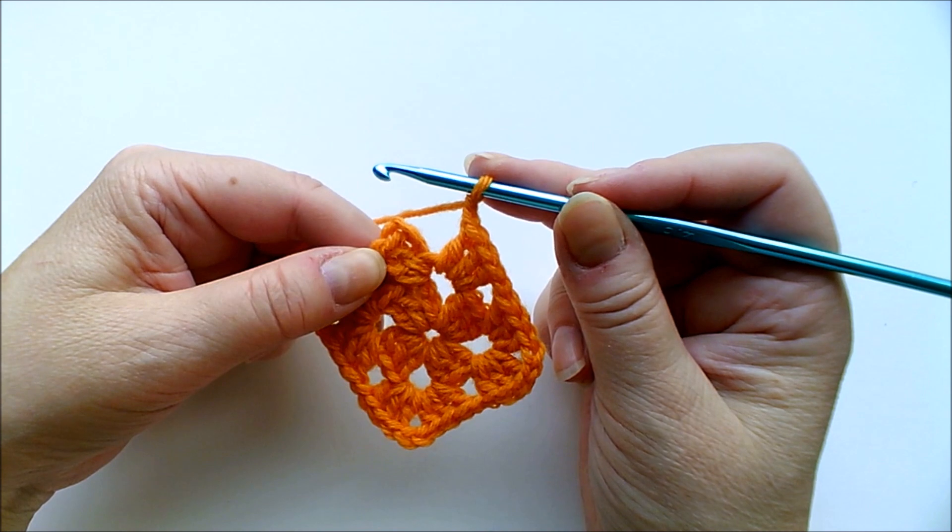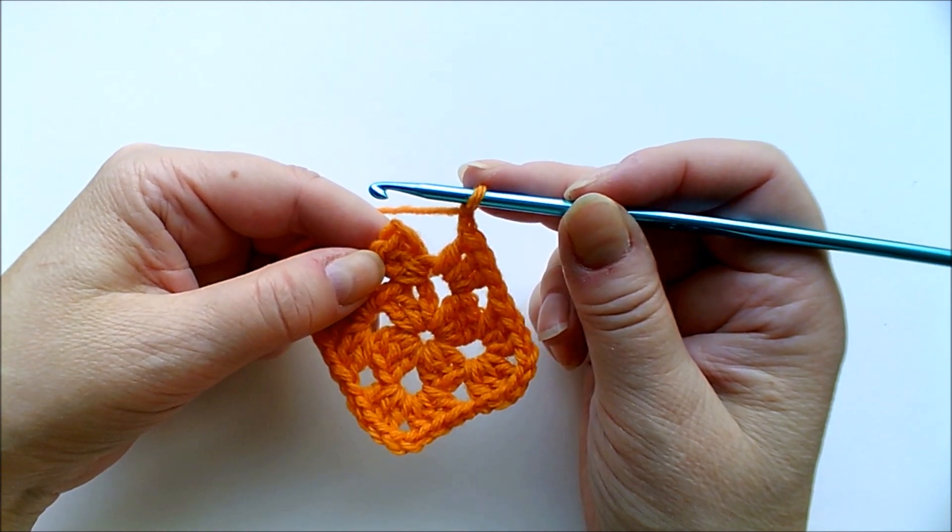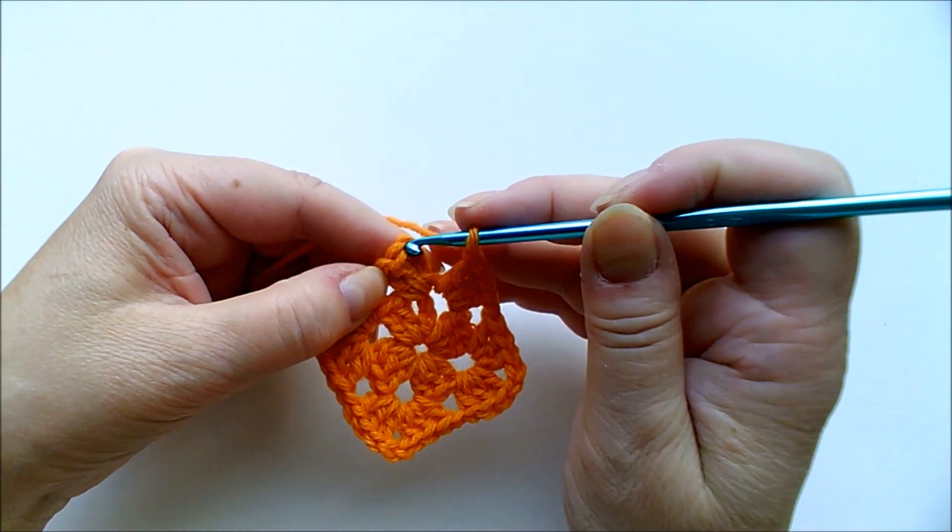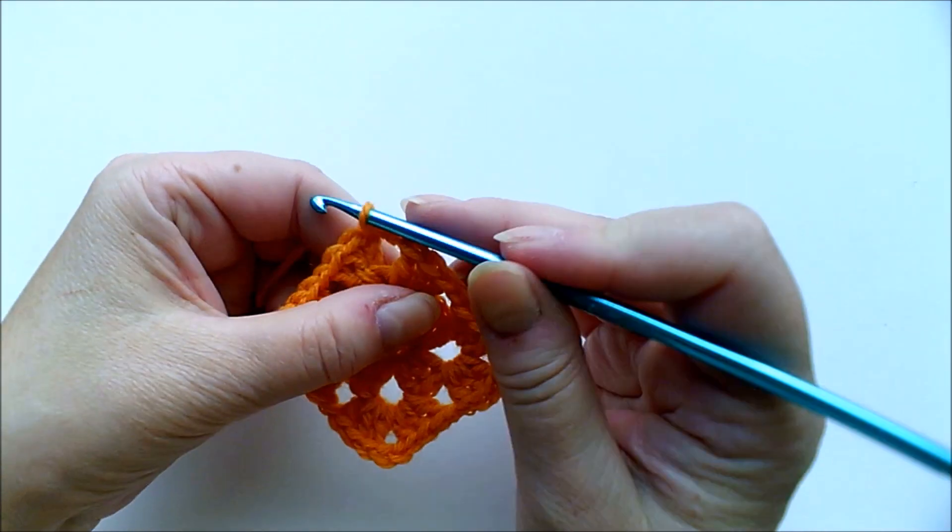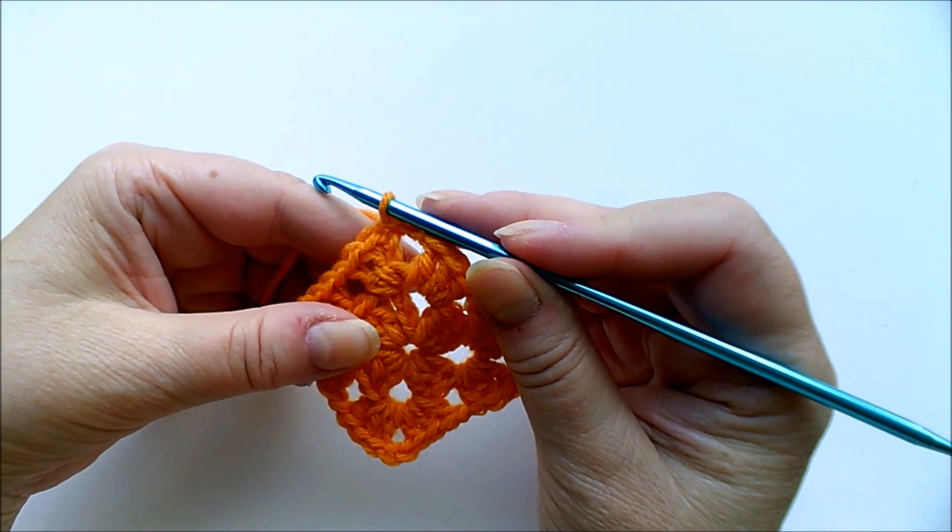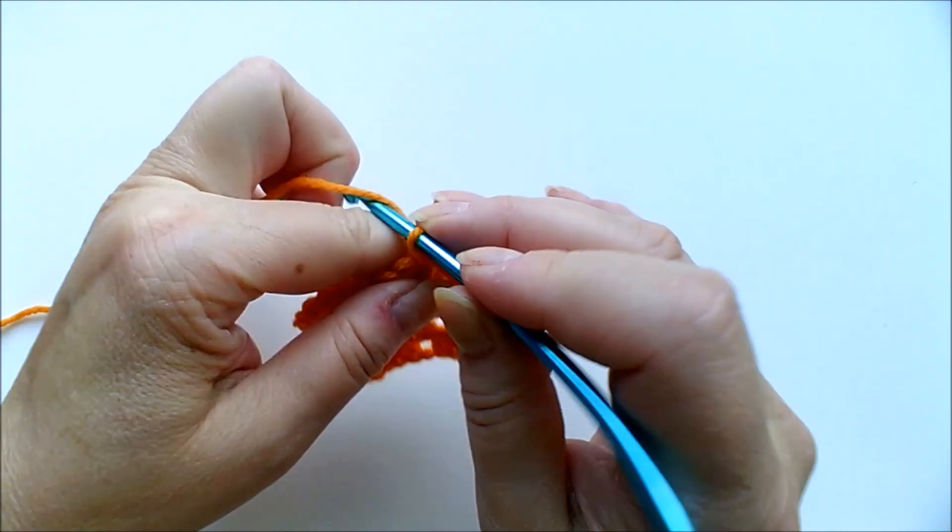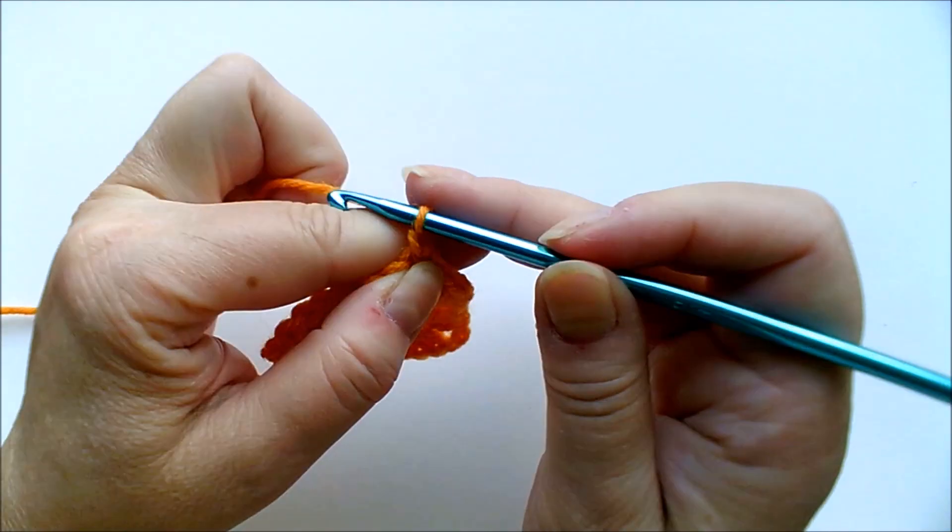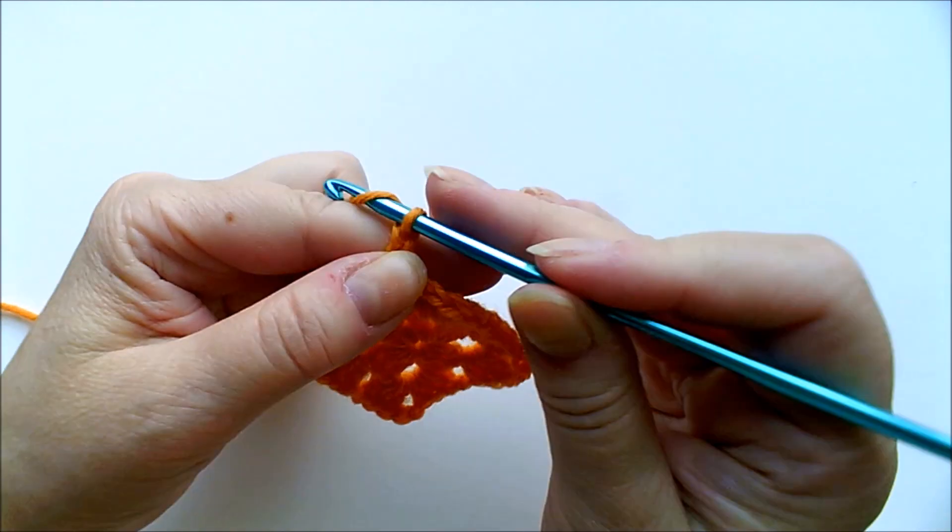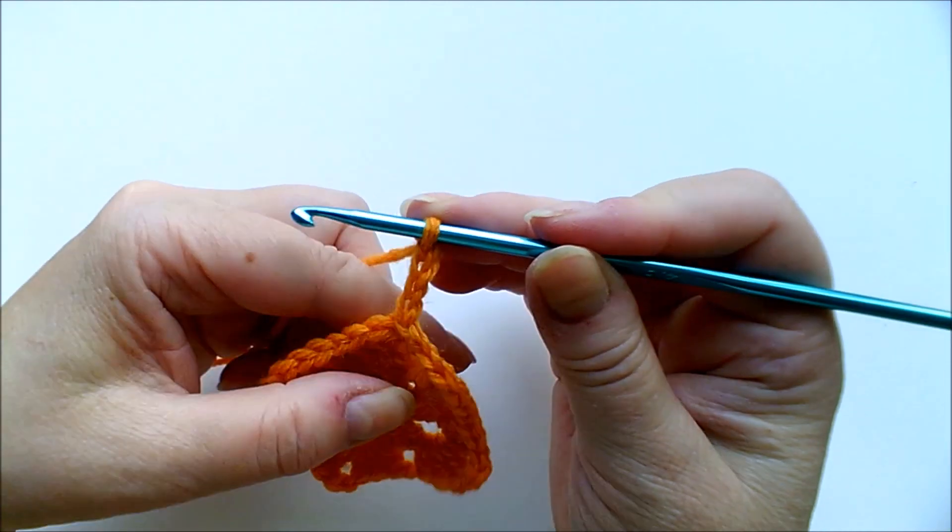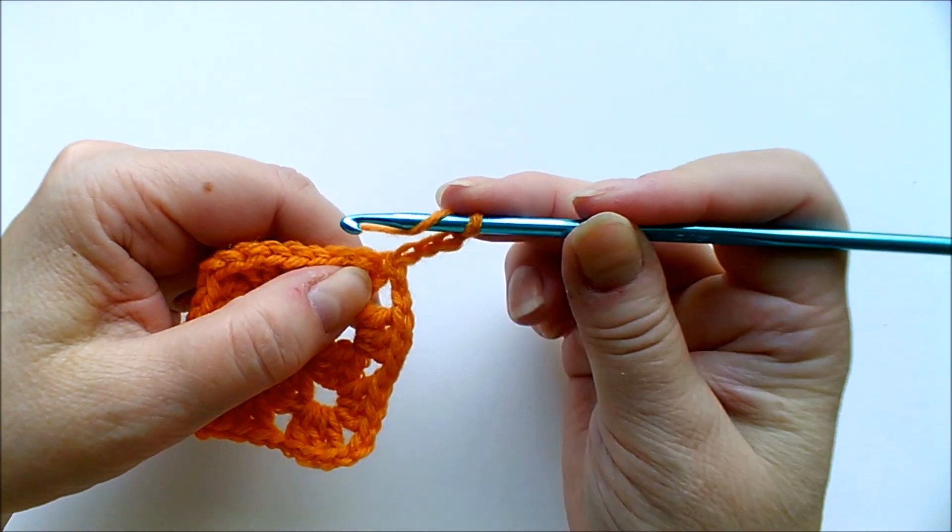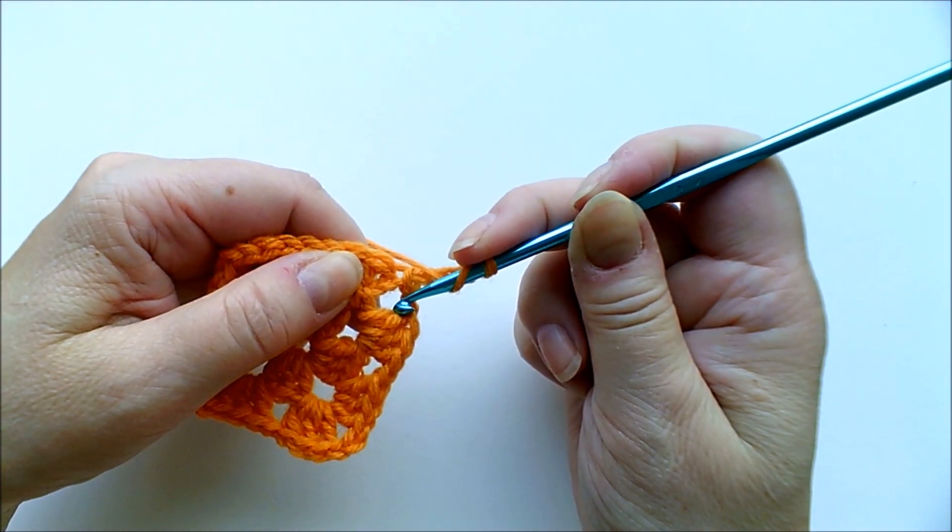And here now I am at the end of the second row. And again I'm finishing that row off with a slip stitch and then just the same as before, four chain stitches and double crochet into the corner.